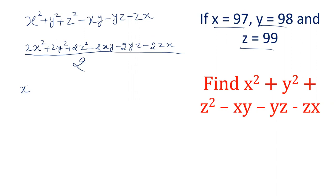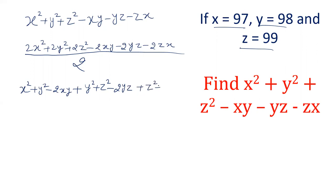Now the numerator can be written by grouping: we had 2x², we use 1x², and we had 2y², we use 1y². Taking another y² that is left and z² together with 2yz. Then we have 2z², x² and 2zx — because we had 2x² and we took 1, so 1 is left. All divided by 2.